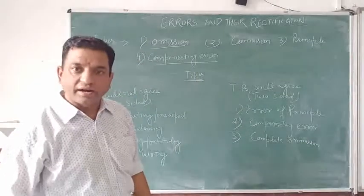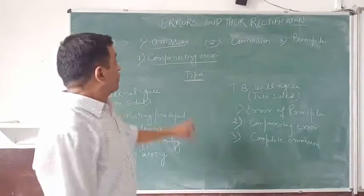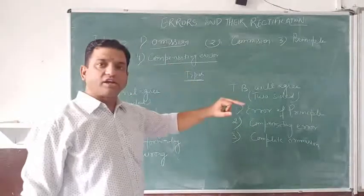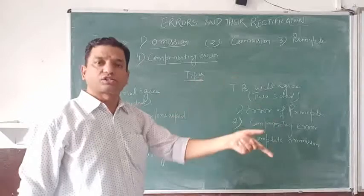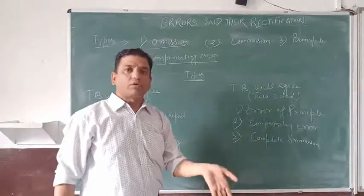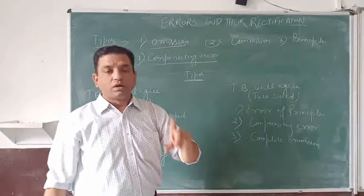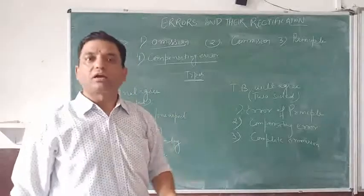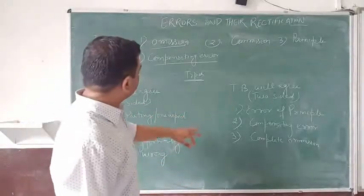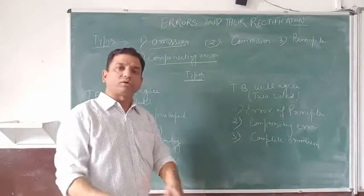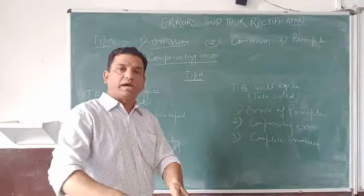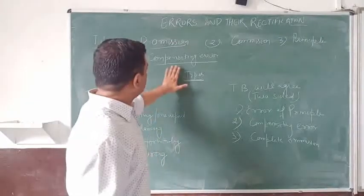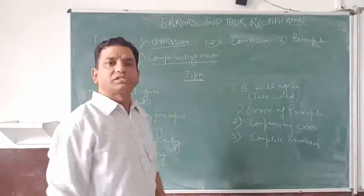The next and last type is compensating error. It is that error in which the impact of the first error is cancelled out by the commitment of another error. Once you have made the first mistake, later on you commit another mistake, and because of that the impact of the first error is eliminated. That is a compensating error.